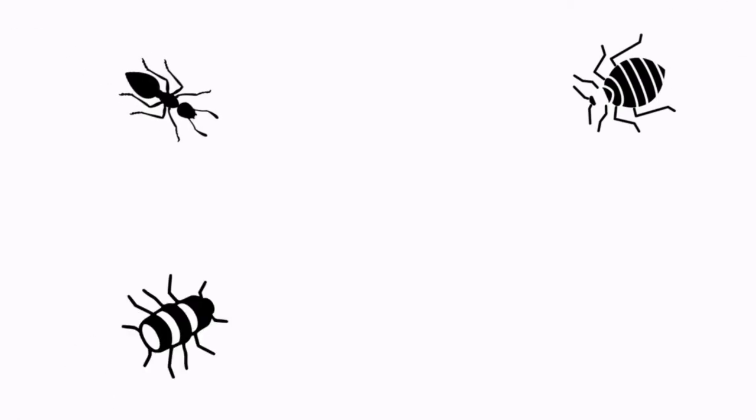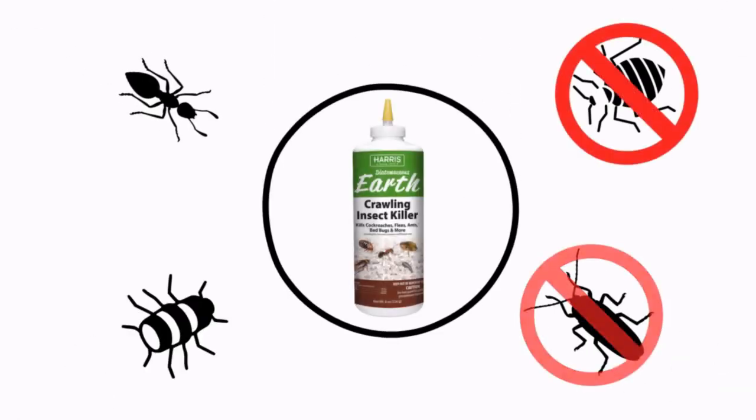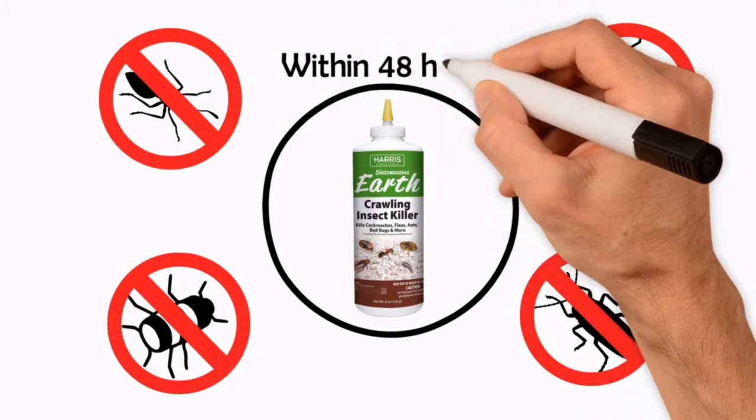Insects that come in contact or ingest Harris Diatomaceous Earth Crawling Insect Killer will die within 48 hours.